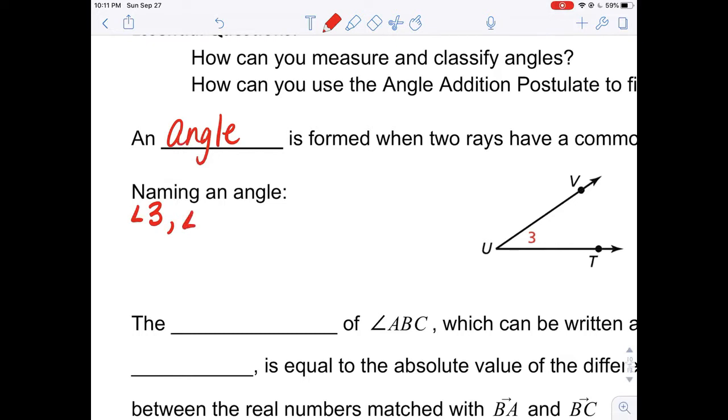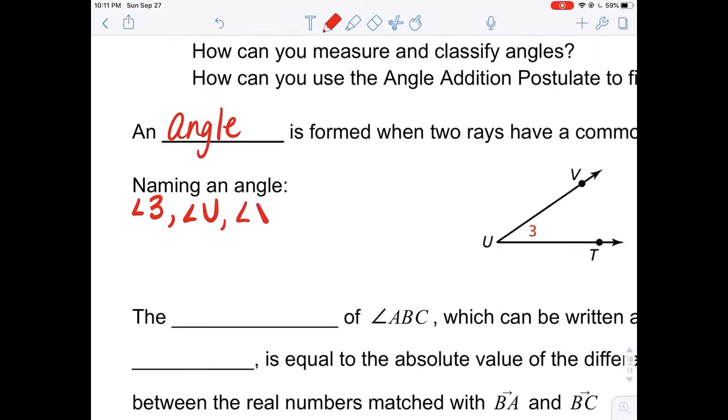The most common way to name angles is by using three letters—three letters from the angle. The vertex must always be the middle letter. So we could name this angle, angle VUT, or we could even name it angle TUV. What's important though is that the middle letter is always the vertex. The middle letter must always be the vertex.